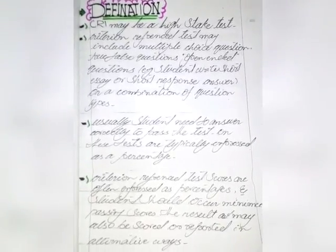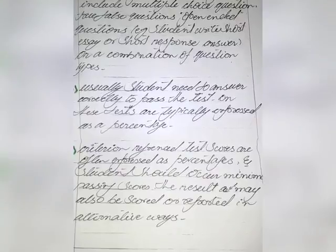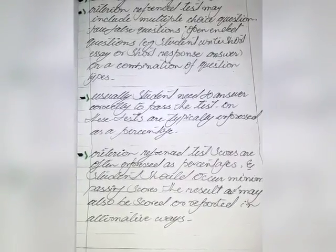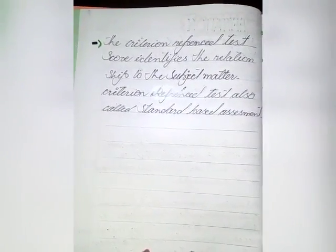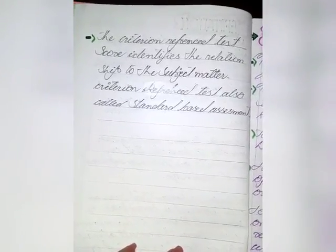The criterion reference test may include multiple choice questions, true or false questions, open-ended questions, short answer or short response questions. Students generally need to answer correctly a set percentage to pass. CRT scores are often expressed as percentages, and students must achieve a minimal passing score. The criterion reference test score identifies the relationship to the subject matter, and criterion reference tests are also called standard-based assessments.